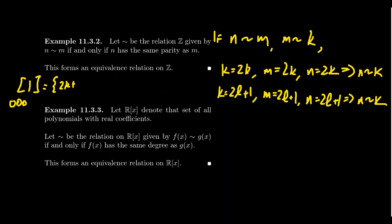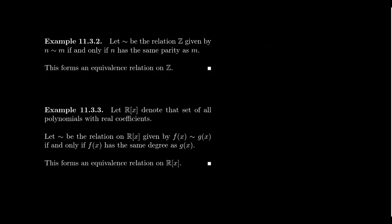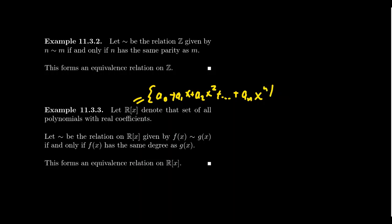Let's look at a second example. We introduce the notation R[x] to denote the set of all polynomials with real coefficients — notation borrowed from abstract algebra. A polynomial looks like a₀ + a₁x + a₂x² + ... + aₙxⁿ, where n is a natural number (including 0) and all the coefficients aᵢ are real numbers.